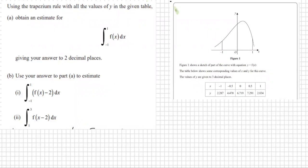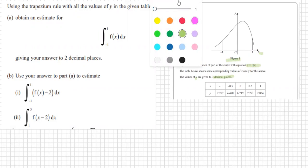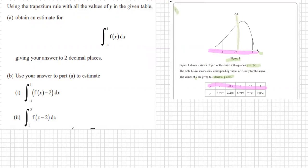Figure 1 shows a sketch. This is figure 1 over here. Y equals f of x, and the table below shows the corresponding values of x and y for this curve. The values of y are given to three decimal places. X is in the x plane, and then the y's are here.